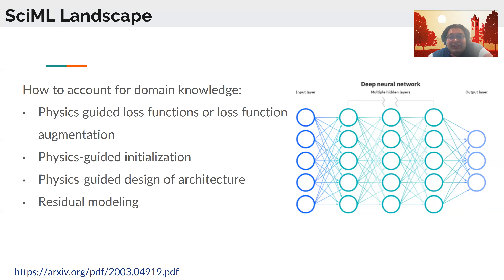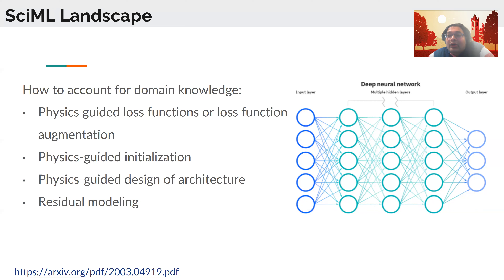The second broad idea is designing architectures that inherently account for these constraints. You have capsule networks, ODE nets, and other architectures that ensure rotation invariance, translation invariance, and symmetries. You can also have different activation functions that act as different basis functions, representing different functional spaces over which your solution lies.